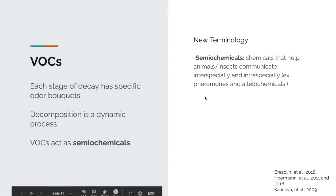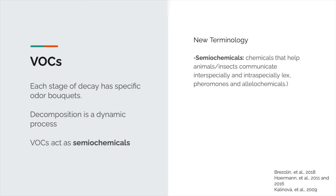Now we move on to our discussion of volatile organic compounds. As we just saw, these microbial communities are constantly changing throughout the decay process and increasing, and this has a direct effect on the odor bouquet produced by the carcass. These microbes facilitate the breakdown of macromolecules into their smaller component parts known as volatile organic compounds — VOCs — and these VOCs directly change in composition and concentration as a direct result of the changing microbial community. The process of decay is an incredibly dynamic process constantly undergoing changes, which have a direct result on the odor bouquet produced.